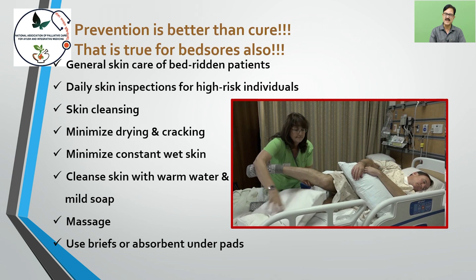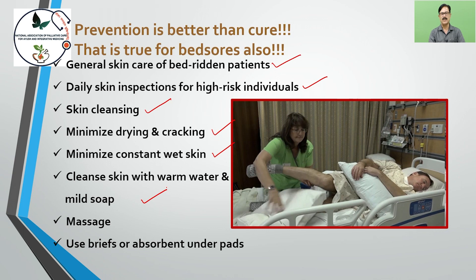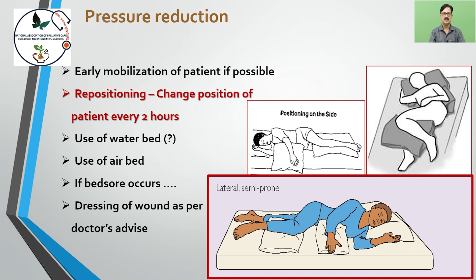Prevention is better than cure, and that is true even for bed sores. General skin care of bedridden patients is very important. Daily skin inspection of high-risk individuals should be done. Skin cleansing is important. Minimize drying and cracking of the skin, and minimize constant wet skin. Clean skin with warm water and mild soap. Massage is very important and use briefs or absorbent underpads. Pressure reduction is possible by early mobilization whenever possible. Reposition and change the patient's position at least every two hours. Use a water bed or air bed wherever possible. If a bed sore occurs, dress the wound as per the doctor's advice.